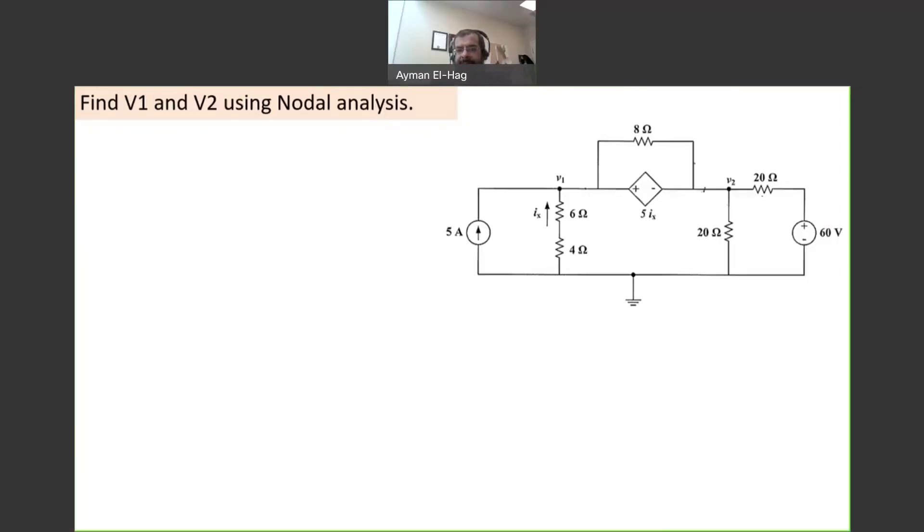Hi everyone, let's have this interesting nodal question. In this question, we have the reference point has been already assigned to us. As I mentioned, sometimes it is assigned, sometimes you need to assign it yourself. The question asks, let's find V1 and V2 using nodal analysis.